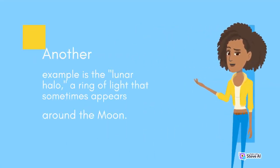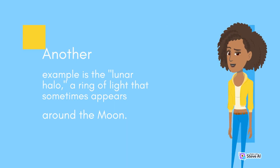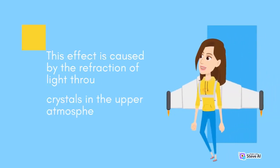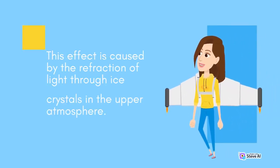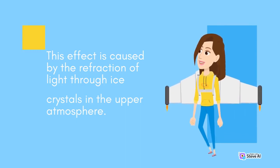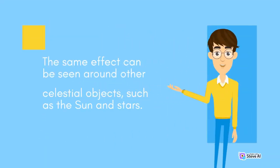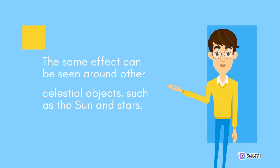Another example is the lunar halo, a ring of light that sometimes appears around the Moon. This effect is caused by the refraction of light through ice crystals in the upper atmosphere. The same effect can be seen around other celestial objects, such as the Sun and stars.